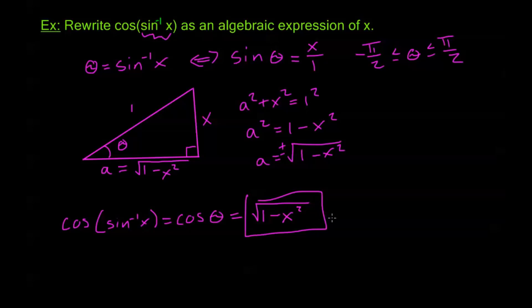That's the end of section 6.4. In the next sections, 6.5 and 6.6, we'll be stepping away from right triangles and talking about the law of sines and the law of cosines. We'll see you there.